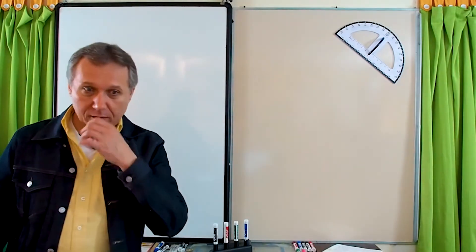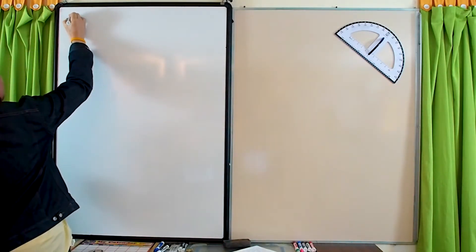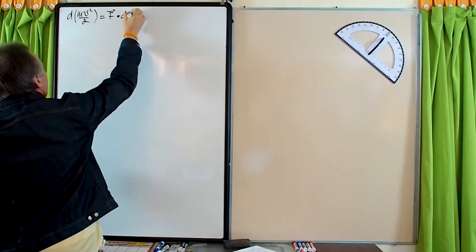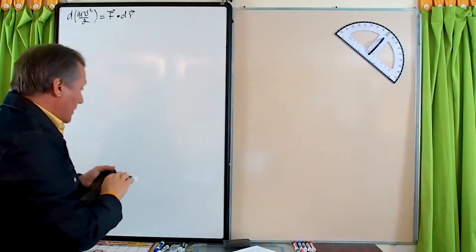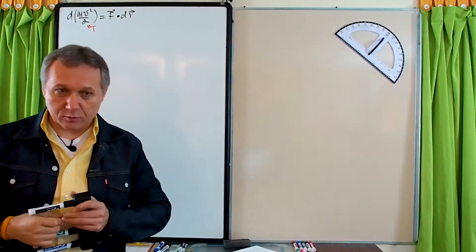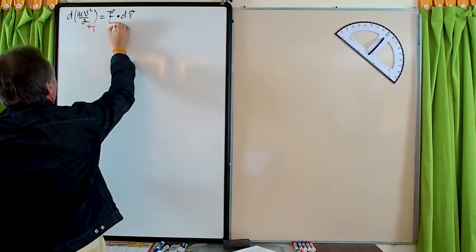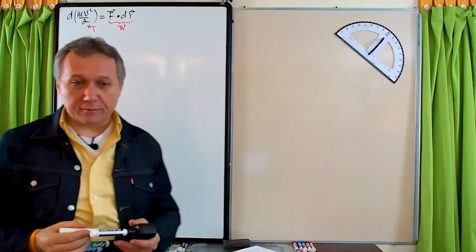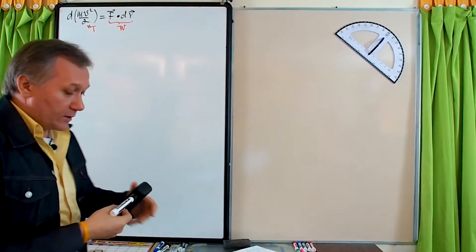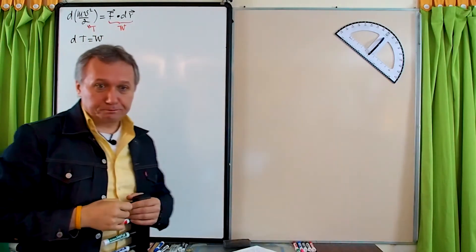After massaging that equation we ended up with d(mv²/2) = F·dr. We called the left side kinetic energy — a completely new structure, the energy of motion. The right side we called work — work done by force F over infinitesimal displacement dr. As a result we arrived at what is called the work-kinetic energy principle.